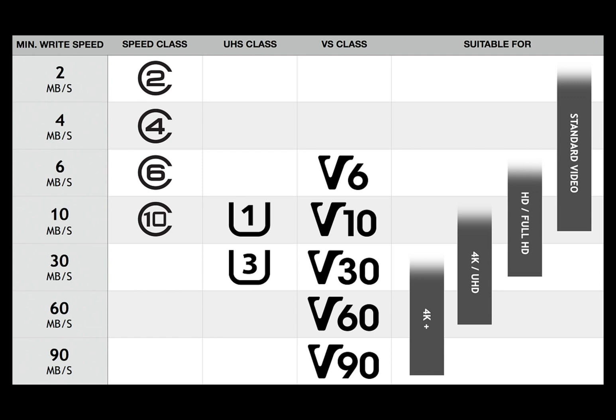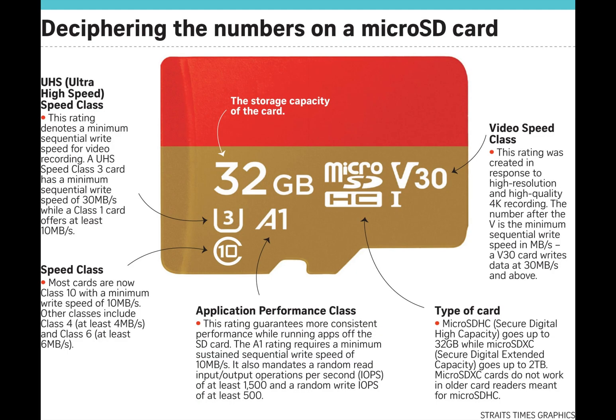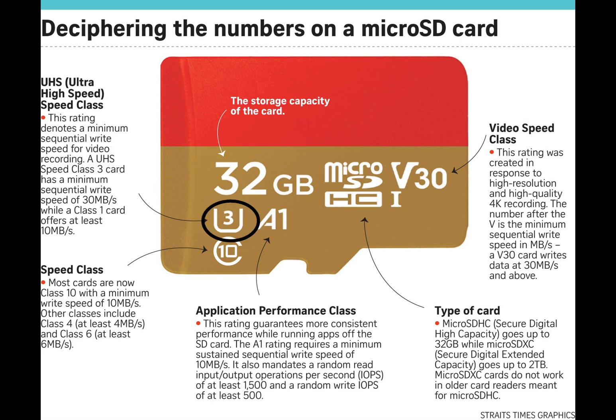So finally, what do all these numbers and graphs mean? This is how you decipher the numbers on a micro SD card. Going counterclockwise: the big number is obviously the storage capacity of the card — that's how much storage you can get. Next, this card is UHS or Ultra High Speed. That rating denotes a minimum sequential write speed. A UHS Class 3 card has a minimum sequential write rate of 30 MB/s, while a Class 1 has at least 10 MB/s.